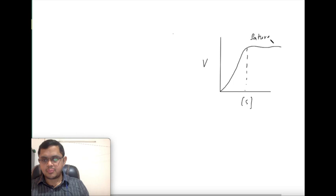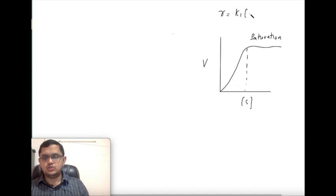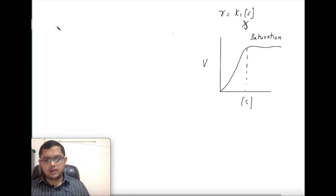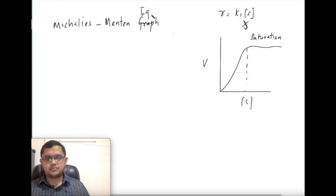So I will get a graph something like this — a saturation curve. Our normal chemical reaction models, like rate r equals k1 times substrate, cannot explain this graph because as per that equation the reaction is a first-order reaction. So we need a special model to explain this particular graph. That is what is called the Michaelis-Menten equation — the two scientists who explained how enzyme saturation works. It is commonly called the MM equation.